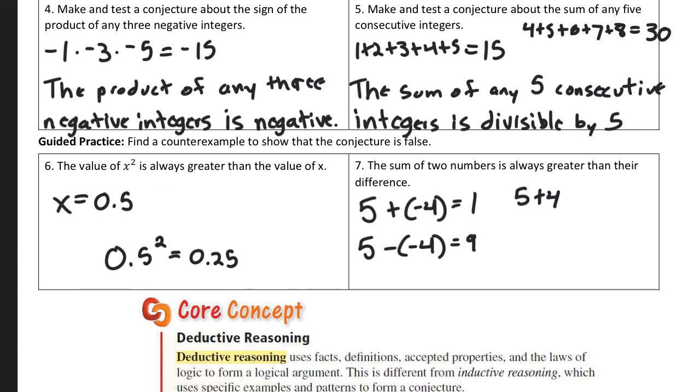Next, the sum of any five consecutive integers. This is a lot like the last one with sum of three consecutive integers. If I add together three consecutive integers, it was divisible by three. If I do it for five, it's divisible by five. It will always end in five or zero, meaning it's always divisible by five.